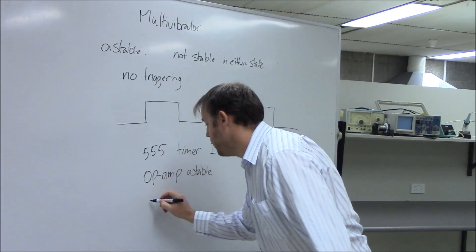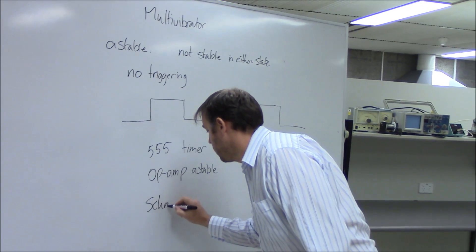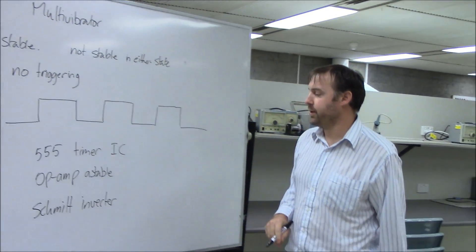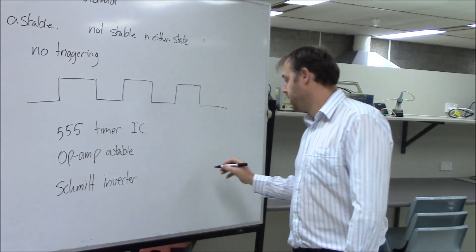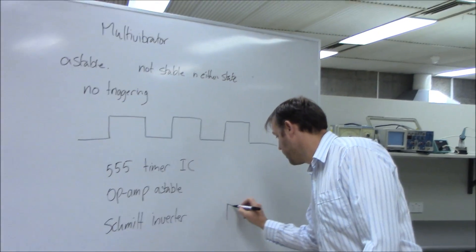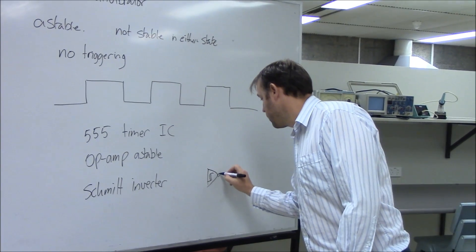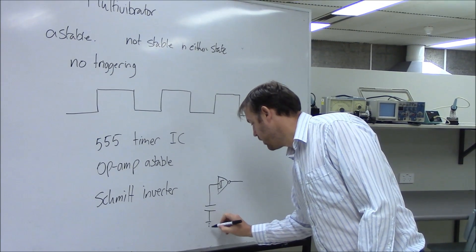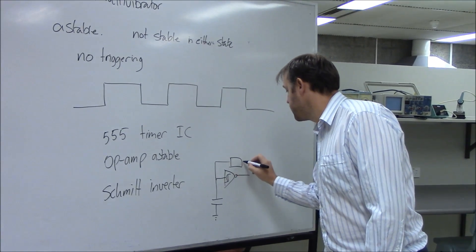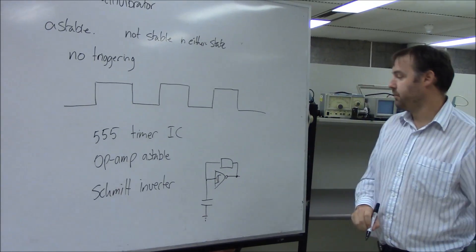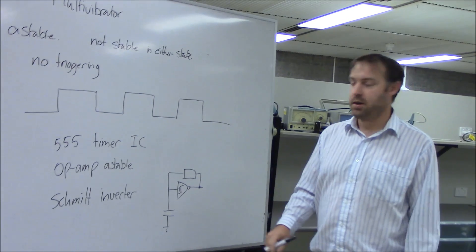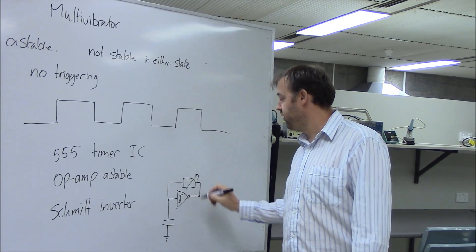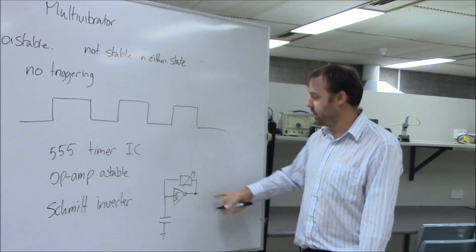A third type you can use is a Schmitt inverter. This is my favorite because it's a very simple circuit. I'll draw it quickly because it's very easy. The capacitor to ground, you connect the output to the input with the resistor. That produces the astable. You can adjust the frequency, so how quickly it does it, by adjusting this resistor. If you put a variable resistor there you can control it. That looks like the simplest one out of the three. It is the most simple.